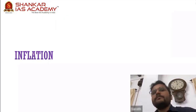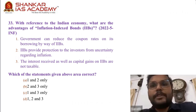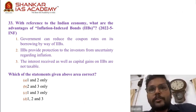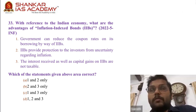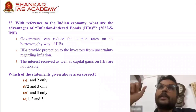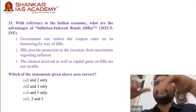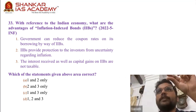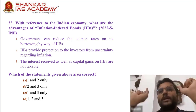We are done with money and moving to inflation — more questions here, about 12 or 13. Question 33: With reference to the Indian economy, what are the advantages of inflation index bonds? Government can reduce the coupon rates on its borrowing by way of inflation index bonds — coupon rates are the interest rates offered. How do inflation index bonds work? It is different from the conventional concept of inflation adjustment where the government would keep the principle fixed and adjust the interest rate according to inflation.